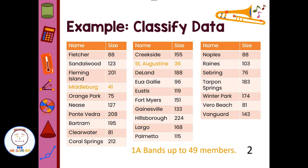Then let's move up to the next category. We have 2A bands are from 50 to 99. We have those in blue. We have Fletcher, Orange Park, Clearwater, Egalley, Eustace, Naples, Sebring, Vero Beach. That gives us eight bands in the category of 2A. That's from 50 to 99 members.